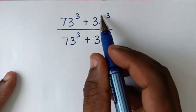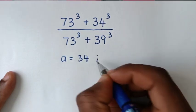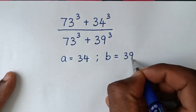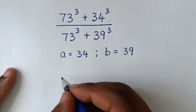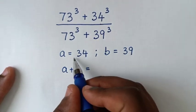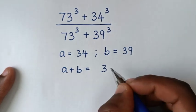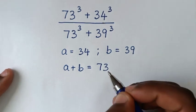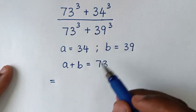we start by letting 34 as a, so a is equal to 34, and 39 as b, so b is equal to 39. Then from this 73, we note that a plus b equals 73, because 34 plus 39: 4 plus 9 is 13, carry 1, 3 plus 3 is 6 plus 1 is 7. So a plus b equals 73.